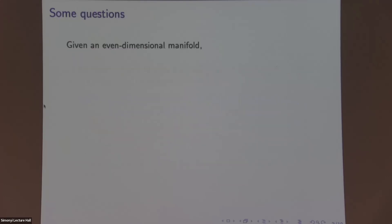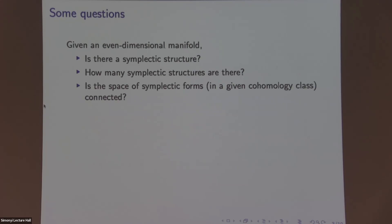And if this path is honestly an equal sign, this is called symplectomorphism. So some questions, very basic questions for symplectic structures are the following: Given an even-dimensional manifold, you can ask, is there a symplectic structure? If there are, how many there are? And is the space of symplectic forms connected?